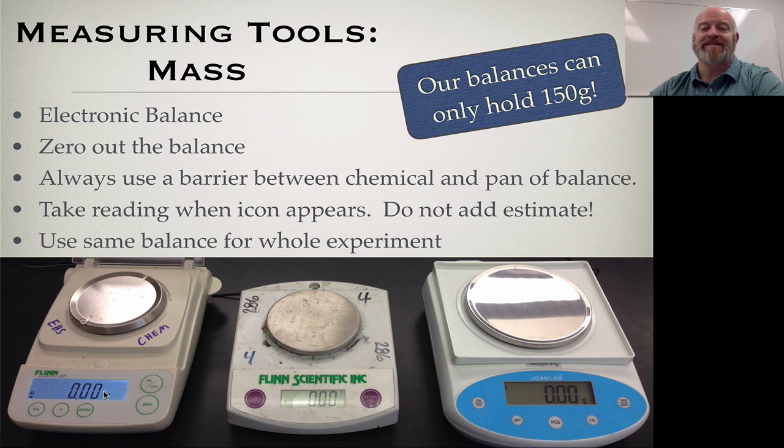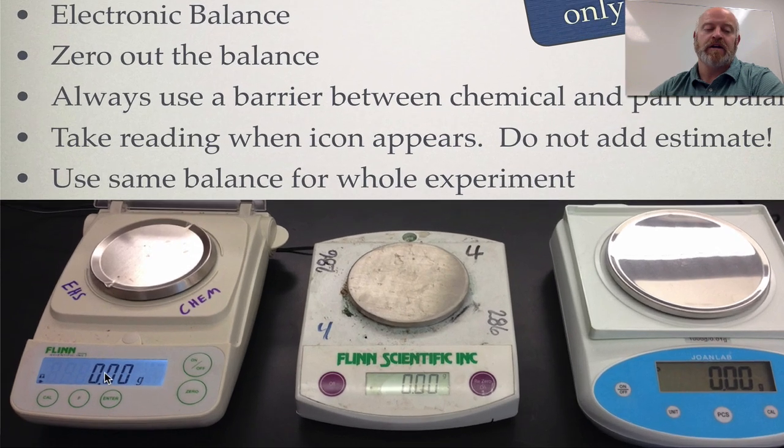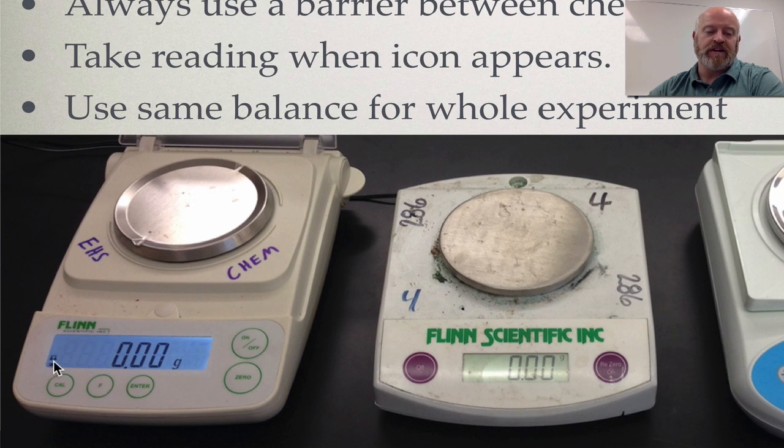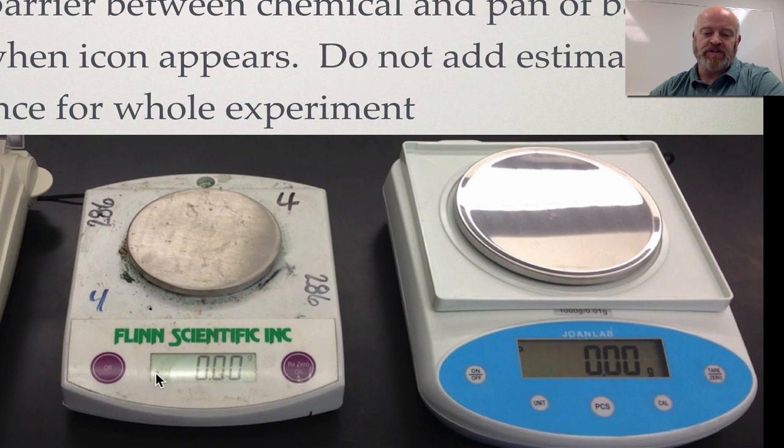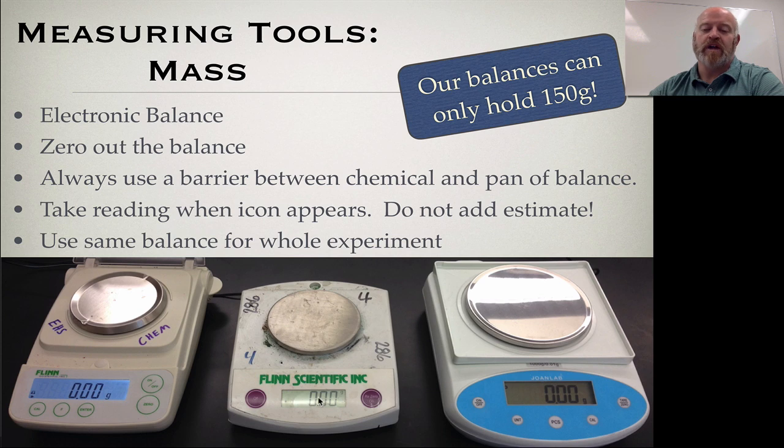So because of that, you're always going to see the numbers moving and jumping slightly. They're never going to sit still perfectly for you in most of our balances. What they have built in for us is an icon. So this balance has a little balance icon. This balance has a little star. This balance has a little zero or a little circle up in the right-hand corner. As soon as you see that icon in any of these three balances, whatever number reads on that screen is the number you take, because it's telling you, hey, I'm done, here's your answer.